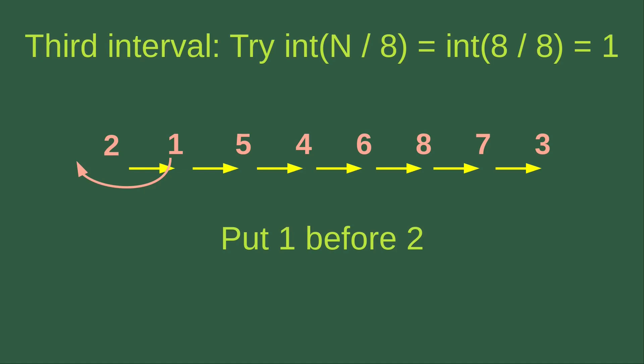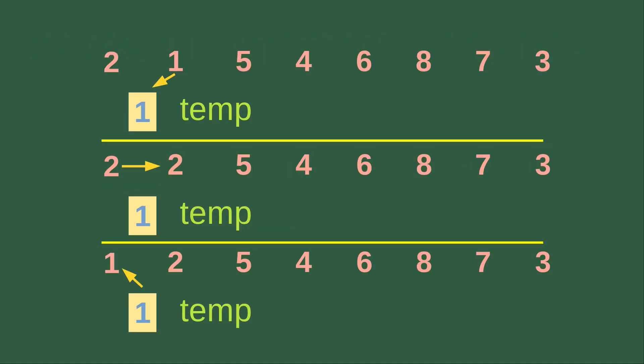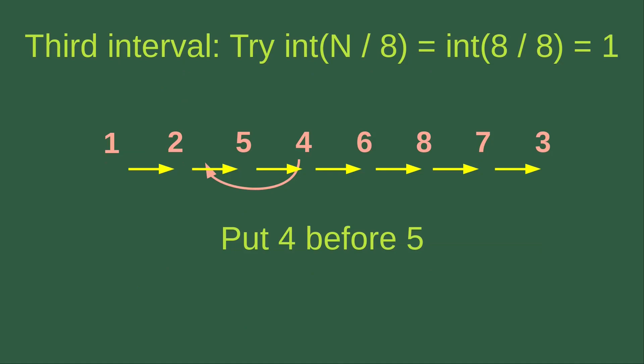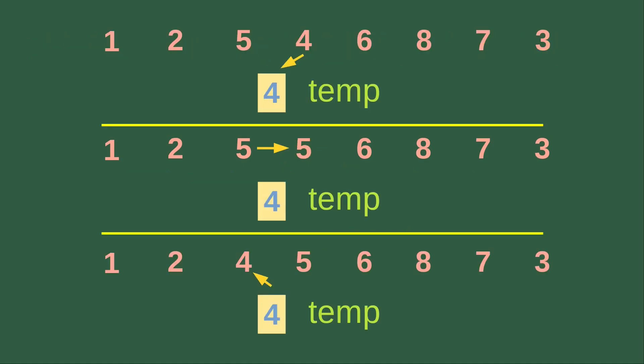We see that 1 should come before 2, so we handle this sorting first. We put 1 to the temporary variable, then copy 2 to the right-hand side so that the temporary variable can be copied to the left-hand side — 1 and 2 are swapped. Then we see that 4 has to come before 5, so we take care of it using insertion sort. 4 is put to the temporary variable, we copy 5 to the right-hand side, and then copy the temporary variable to the left-hand side, so 4 and 5 are interchanged.